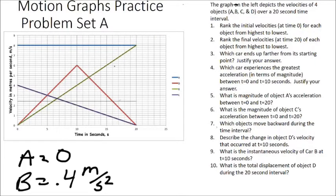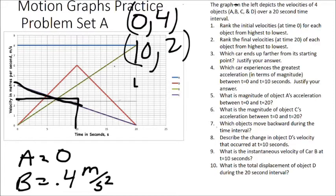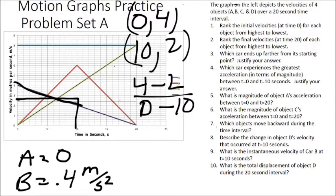Now let's look at line C. Notice that line C starts off with a negative slope. But remember, we're only looking at magnitude so direction doesn't matter. We want the slope between 0 and 10 seconds. At time 0, y equals 4; at time 10 seconds, y equals 2. Change in y: 4 minus 2, over change in x: 0 minus 10. That gives us 2 over negative 10, so C equals negative 0.2 meters per second squared.